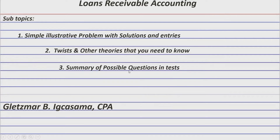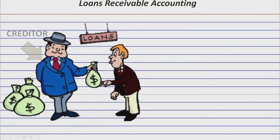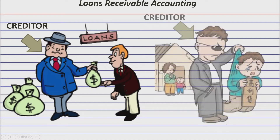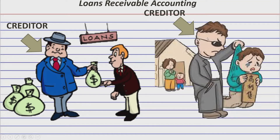Let's start with the point of view. The point of view that you're going to take in accounting for loans receivable is of the creditor. So if this is the beginning of the loan transaction, you are the one who will give money first to the debtor. But afterwards, you will be the one who will collect for interest and principal. It would be much easier if you assume that you are a bank which extends loans to earn interest income. So your point of view is you are a bank which extends loans to earn interest from customers.